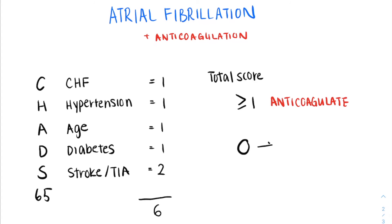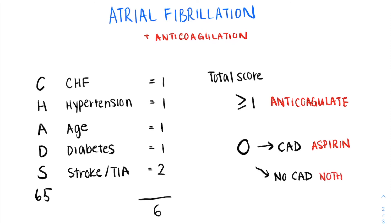If patients have a score of zero, we have to consider whether or not they have a history of coronary artery disease. For patients with a history of coronary artery disease and a CHADS score of zero, we would suggest anticoagulation with aspirin instead. Patients with no coronary artery disease and a CHADS score of zero don't need any form of anticoagulation, despite the fact that they may have atrial fibrillation.